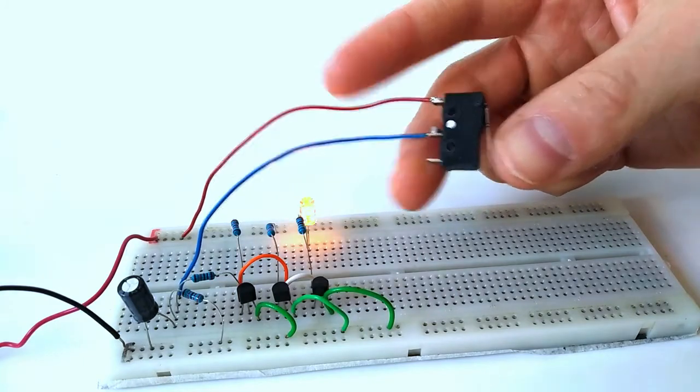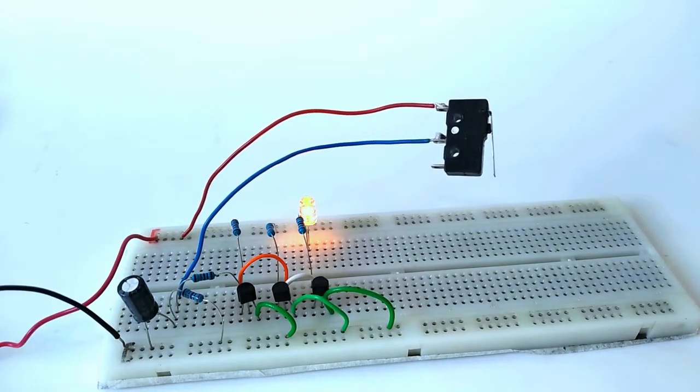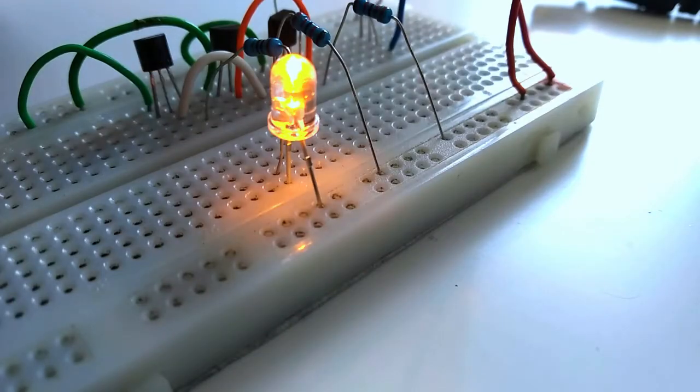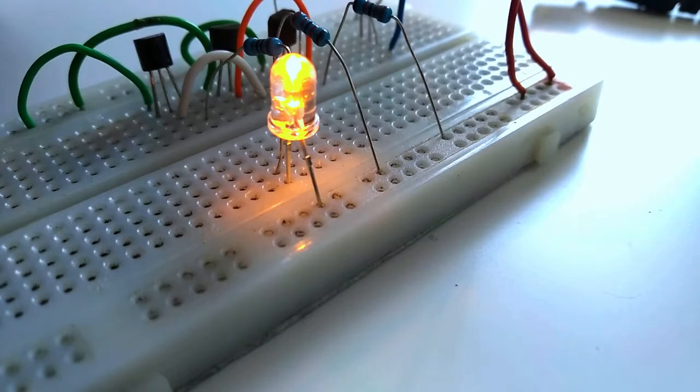This circuit is a timer circuit. Often you'll want at the trigger of a certain event something to switch on for a specific amount of time. In this example circuit we'll switch an LED on for a certain duration.